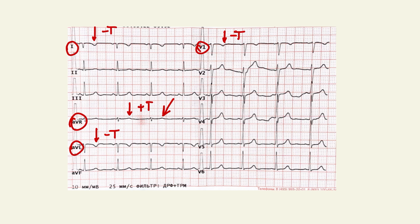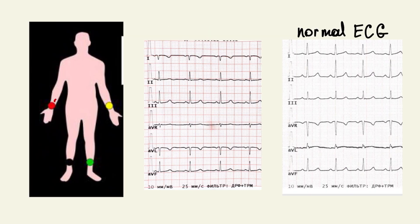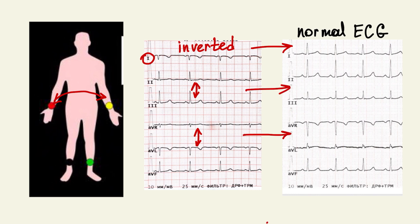All these features tell us that this is limb lead misplacement — specifically a swap of the right arm and left arm electrodes. Lead 1 becomes inverted. Lead 2 and lead 3 switch places. Lead AVL and AVR switch places. So this is an ECG with incorrect electrode placement.